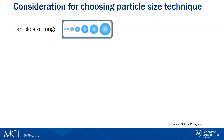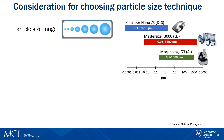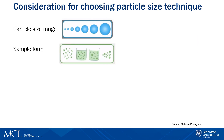There are quite a few things to consider when choosing the best particle sizing technique for your sample. The first criterion is the expected size range. However, as you can see from this plot, the size ranges of the techniques overlap, so we need to consider other criteria. Sample form can also be important — it depends on the state of your sample: is it dry powder, suspension, emulsion, or spray? Not all sample forms work for all techniques.